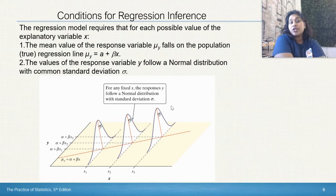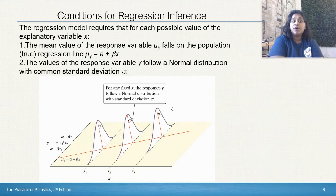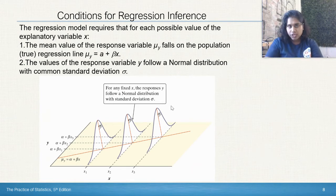The conditions for regression inference. The regression model requires that each possible value of the explanatory variable x meets both: the mean value of the response variable mu y falls on the population true regression line, and the value of the response variable y follows a normal distribution with a common standard deviation.